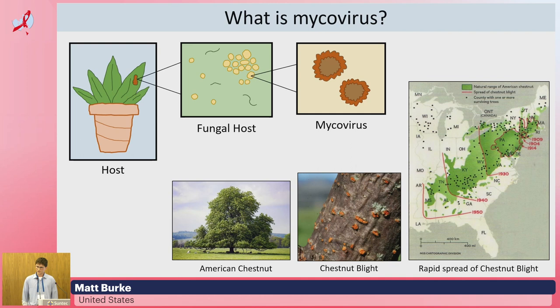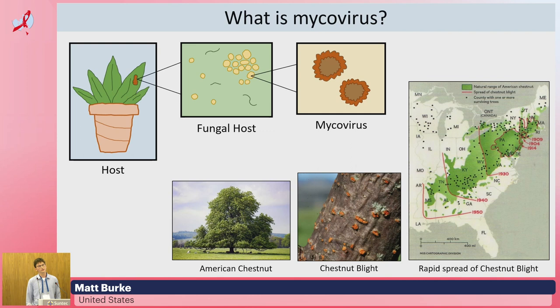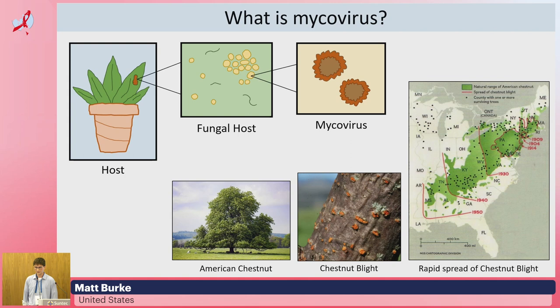The most famous story of mycovirus is the story of the American chestnut tree. Prior to the 1900s, one out of every four trees on the eastern coastline of the US was an American chestnut tree. Then the Asian chestnut tree was brought to New York, bringing with it a fungus that causes chestnut blight, which spread rapidly throughout the US. By the mid-1940s, three to four billion American chestnut trees had died. It was then discovered that a mycovirus called CHV-1 conferred hypovirulence and reduced the severity of chestnut blight, and it was used as a biological control agent in both Europe and northeastern America with moderate levels of success.